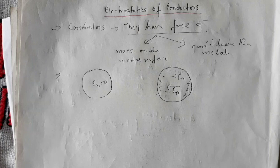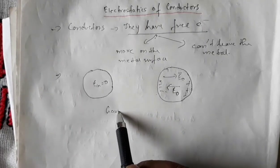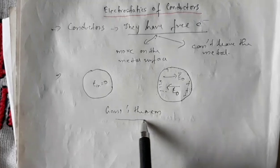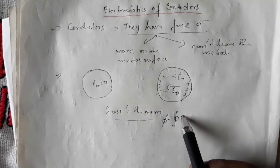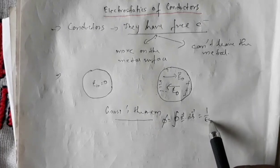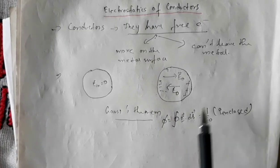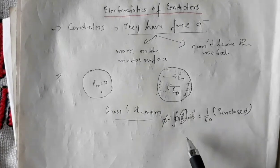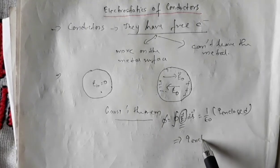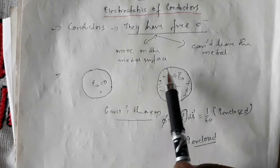What is the consequence of this zero electric field inside a conductor? From Gauss's theorem, electric flux equals the integral over a closed surface of E dot dS, which equals 1 by epsilon times q enclosed. Since the electric field inside the conductor is zero, this expression is zero, which implies q enclosed is zero. That means you cannot have any excess charge inside a conductor.